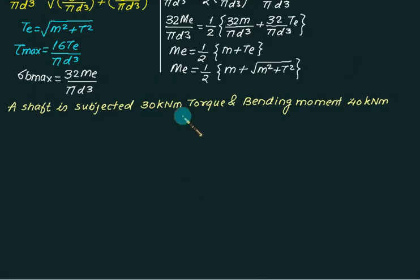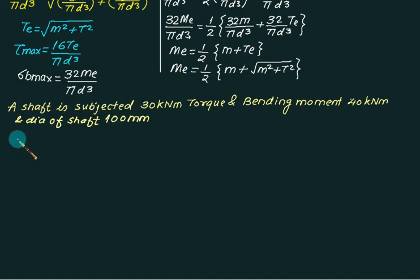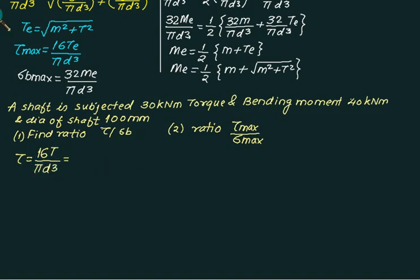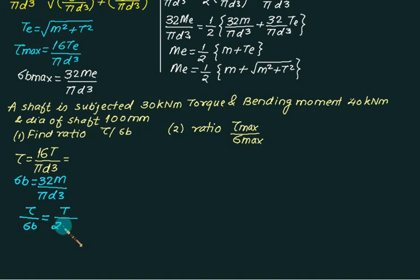Example: A shaft is subjected to a torque of 30 Nm and a bending moment of 40 Nm. The diameter of the shaft is 100 mm (only one diameter given means the shaft is solid). First part: find the ratio tau / sigma_b. Using tau/sigma_b = T/(2M) = 30/(2×40) = 30/80. The answer can be directly calculated as 3/8.